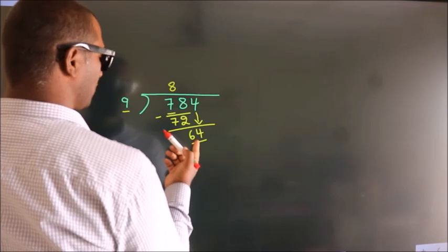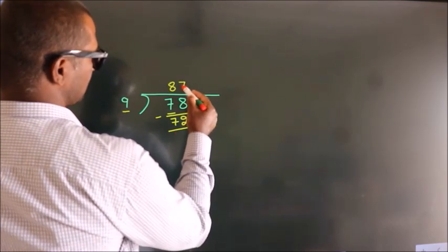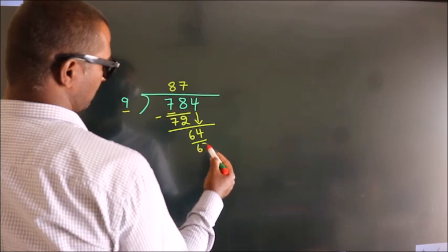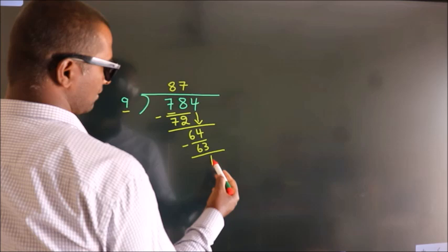A number close to 64 in 9 table is 9, 7, 63. Now, we subtract, we get 1.